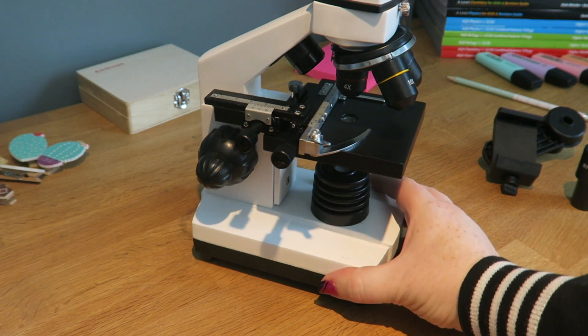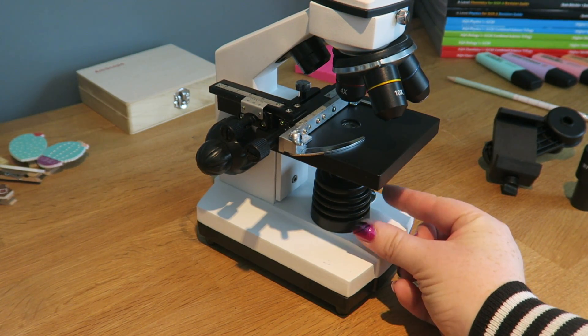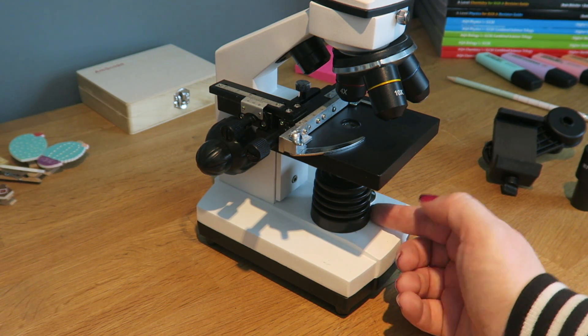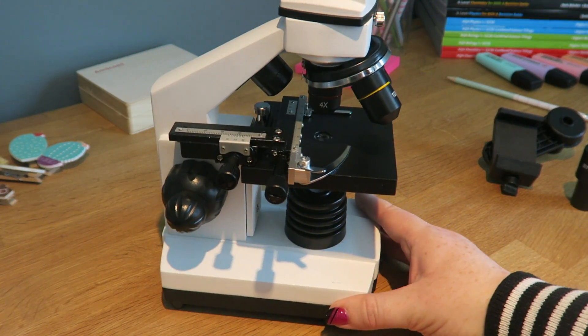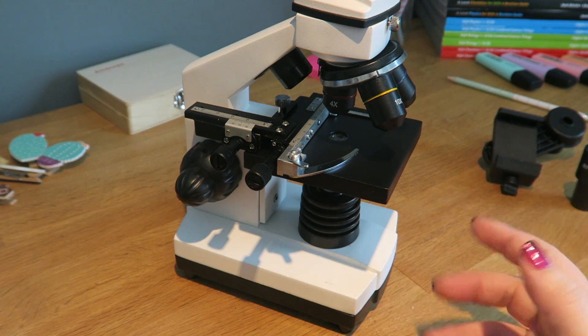Some microscopes won't have a lamp down here. They'll have a mirror, and you can use that to angle light from the ceiling or from a window, so that you can angle the natural light up through, working in exactly the same way. But instead of having a lamp that you can turn on or off, this is just a mirror where you can angle natural light.